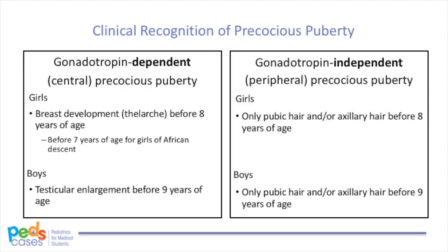Clinically, gonadotropin-dependent precocious puberty is considered when the onset of breast development, or thelarche, occurs in girls younger than 8 years of age. In girls of African descent, the cutoff is one year earlier — younger than 7 years of age. In boys, it refers to testicular enlargement to 4 mL or greater in volume, or 2.5 cm or greater in length, before 9 years of age. If only pubic hair or axillary hair appears before age 8 in girls or age 9 in boys without breast development or testicular enlargement, it is considered gonadotropin-independent or peripheral precocious puberty. Central puberty is suggested by breast development in girls and testicular enlargement in boys.